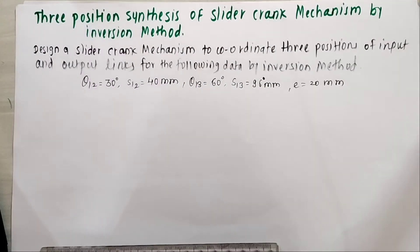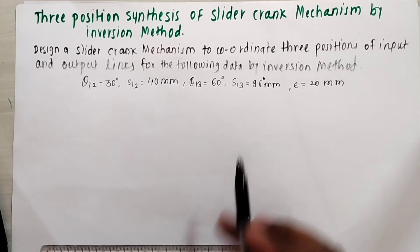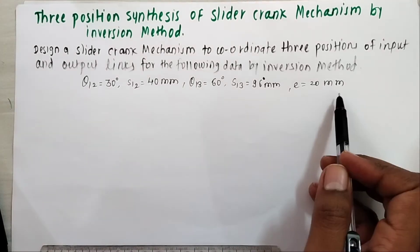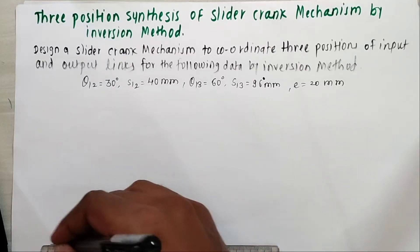In first step we have to take two lines parallel to each other at a distance of E, which is the given eccentricity. I will mark this first line here.